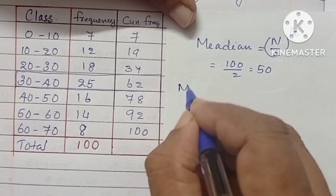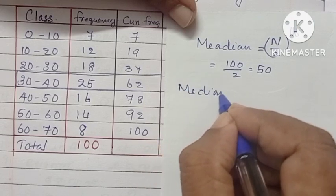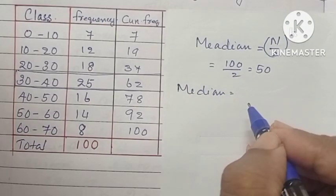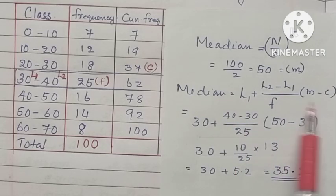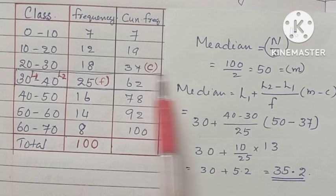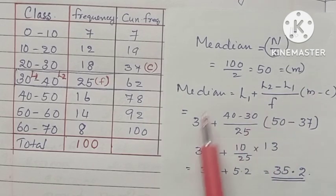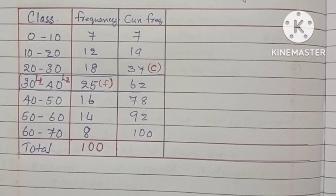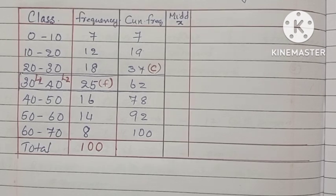The frequency is 25. Now we can find the median by using the formula L1 plus L2 minus L1 divided by F into M minus C. Each term we can substitute the values and finally we will get the value of median as 35.2.